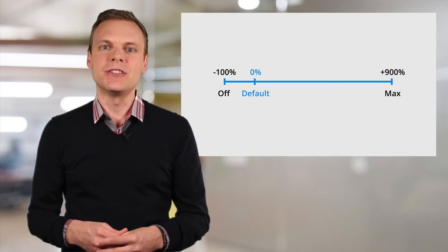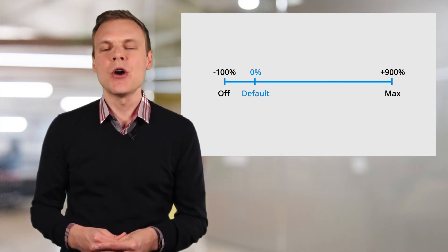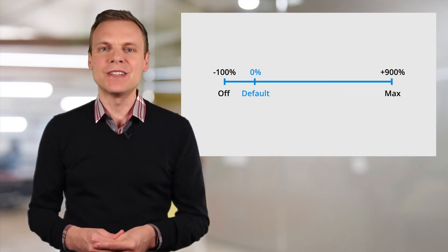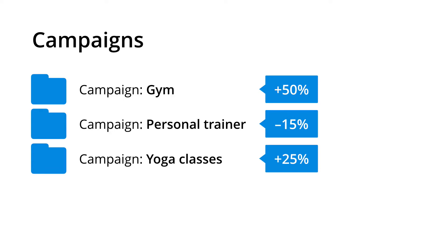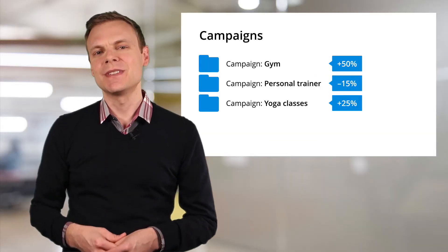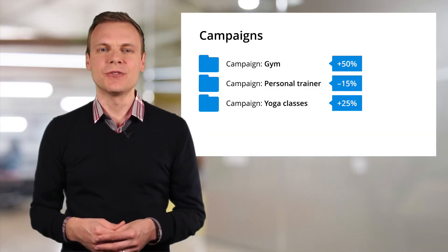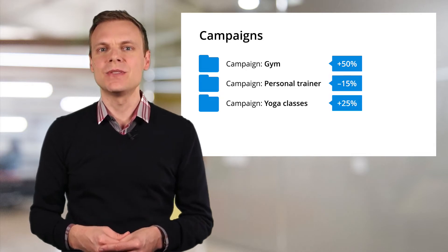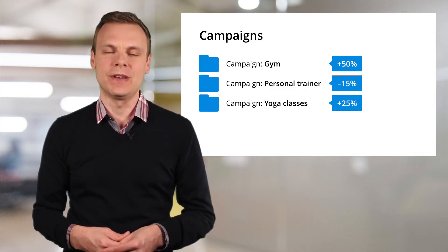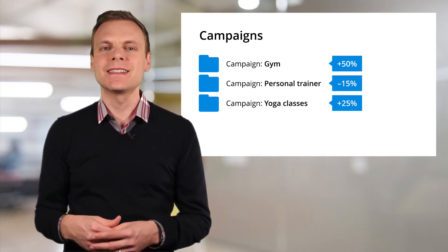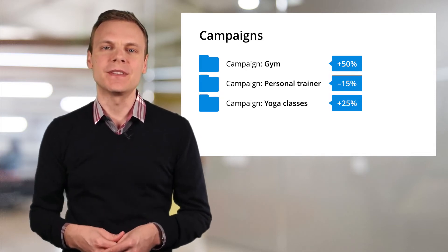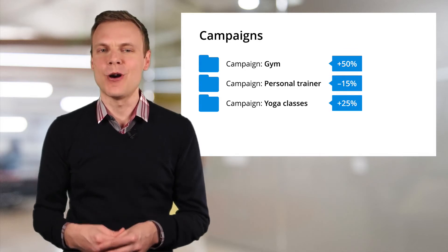Setting a mobile bid adjustment of minus 100% will prevent your ads from showing to people using mobile devices. You can apply different mobile bid adjustments to each of your campaigns inside Google AdWords, choosing to increase the final bid for campaigns suited to your mobile audience, or decrease the final bid if the campaign doesn't perform well on mobile.